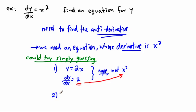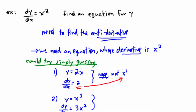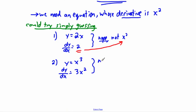Maybe I could guess something else. I tried going one power less, so maybe I'll go one power more — x cubed. So dy/dx of x cubed: the 3 comes in front, so it becomes 3 times x squared. Is 3x squared equal to x squared? Our goal is to find some function whose derivative is x squared. Well, nope — but we're close. We wanted x squared and we've got 3x squared.